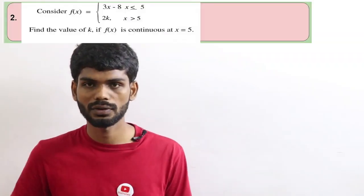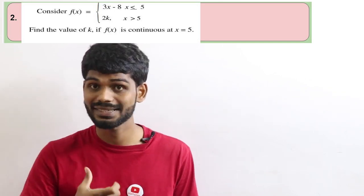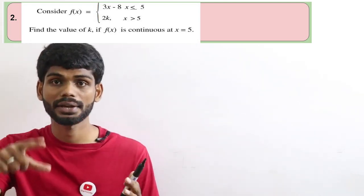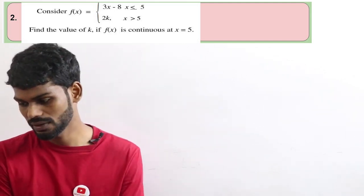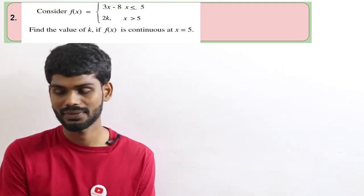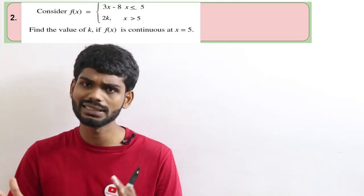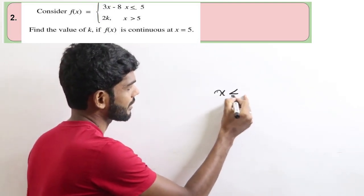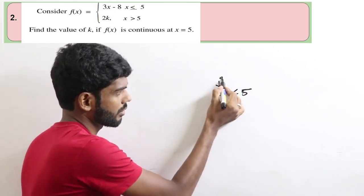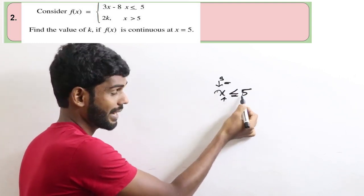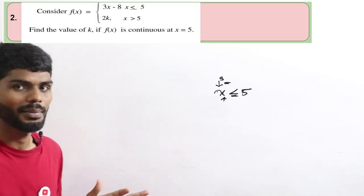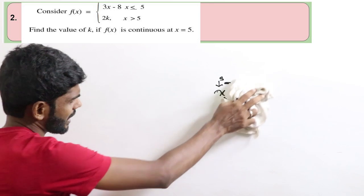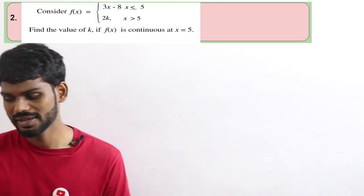Okay, question number 2. We have two functions: the first function is 3x minus 8 for x less than 5, and the second function is kx plus 5 for x greater than 5. Find the value of k if f of x is continuous at x equal to 5.